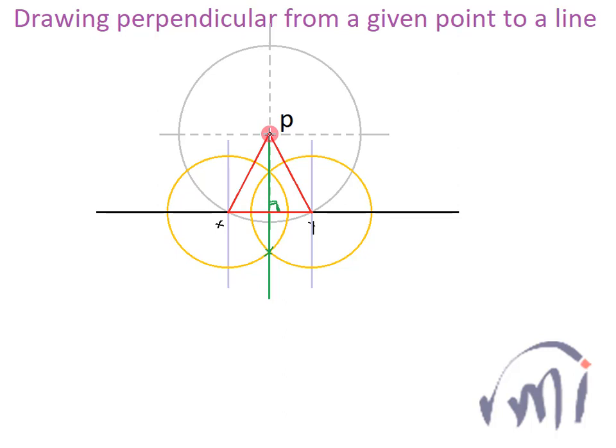And we also know the median drawn from the point where two equal sides of an isosceles triangle meet, that means this point is always a perpendicular bisector of the third side which is XY in this case.